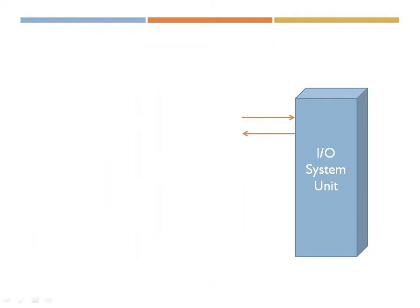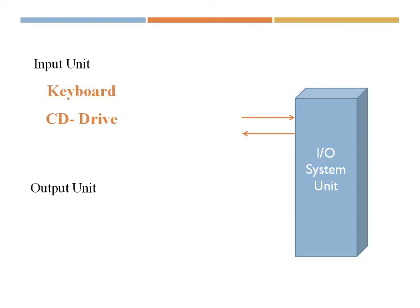The first component we'll look at is the I/O system unit. I/O stands for input and output. This includes the input unit and the output unit. The input unit is used for accepting data from the outside world, and for that we require components such as the keyboard and CD drive. The output unit is used to display or send processed information to the outside world, for example via a printer or CD drive.